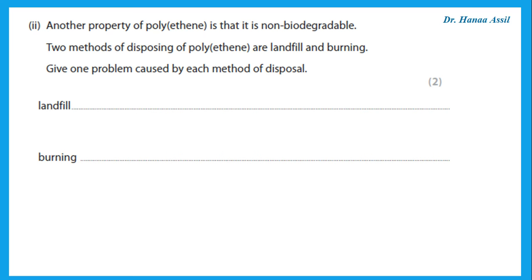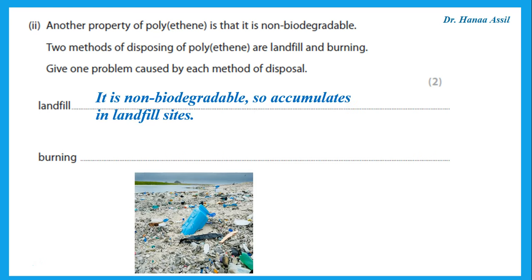Another property of polyethene is that it is non-biodegradable. Two methods of disposing of polyethene are landfill sites and burning. The problem with landfill is that polyethene is non-biodegradable — it accumulates in the landfill sites. If we throw normal garbage, bacteria breaks it down and it is absorbed into the soil. But polyethene cannot be broken down by bacteria, so it just sits there for years and years, accumulating in the landfill sites.